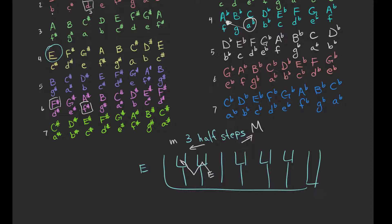Starting on E, we go down three half steps — one, two, three — and we land on a note that's either C sharp or D flat. You always have to skip a letter; you cannot use a letter right next to it. Looking at the examples, the pattern is always a letter apart like A-C, B-D, E-G, etc. So the answer is C sharp minor. Sure enough, E major and C sharp minor are relative.